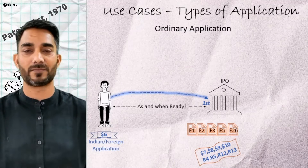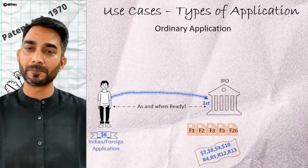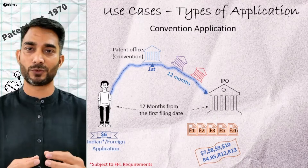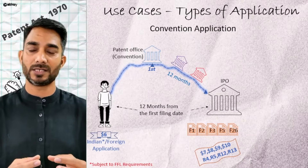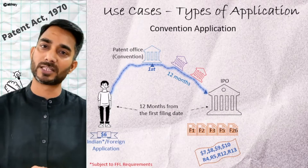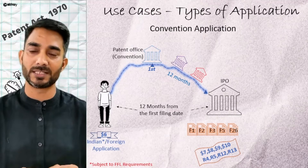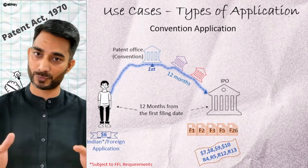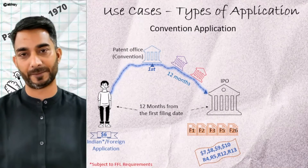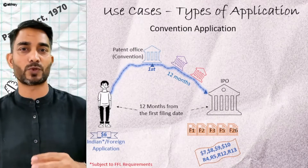Realizing this challenge, countries came together and signed the treaty known as the Paris Convention Treaty. As per this treaty, member countries agreed to provide the same sort of rights and privileges to citizens of other member countries. In simpler terms, this treaty provides a grace period of 12 months to enter other member countries from the first filing date.